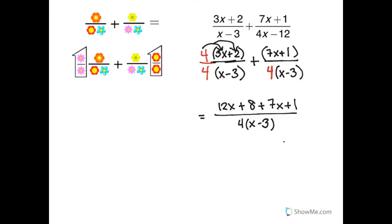All I have to do is simplify the numerator. So 12x and 7x are like terms, and that gives me 19x, and 8 and 1 are like terms, and that gives me 9.